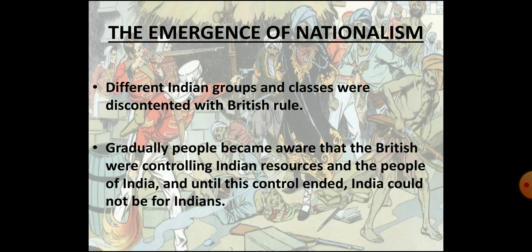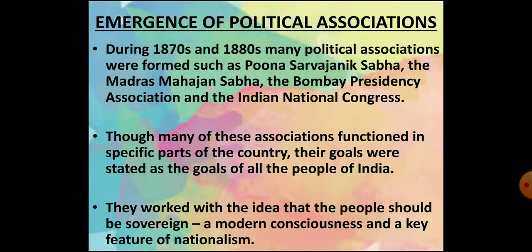From the learning of the previous chapters, it is clear that Indians were unhappy and dissatisfied with the British rule. Slowly and gradually, people started understanding that this land and its resources belonged to the people of India, over which the British were exercising their control. And that until this control was ended, India could not be for Indians. Several political associations formed in the 1870s and 1880s, led by English-educated professionals such as lawyers, started speaking openly about this.